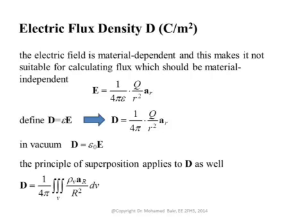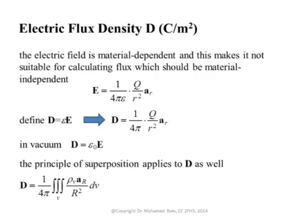In previous lectures we talked about the electric field, and we showed that the electric field resulting from a point charge is given by this expression. It depends on the value of the charge, the square of the distance from the charge to the observation point, and a unit vector pointing from the charge to the observation point. The problem with the electric field is that it is material dependent, because for every different type of material, epsilon will be different.